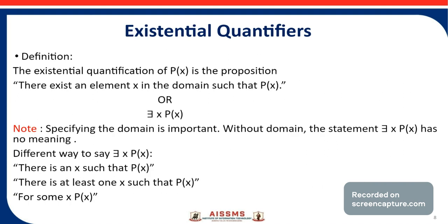The next type of quantifier is the existential quantifier. The existential quantification of p(x) is the proposition: 'there exists an element x in the domain such that p(x).' It is denoted by the symbol ∃x, meaning there exists an element x in the domain such that p(x).